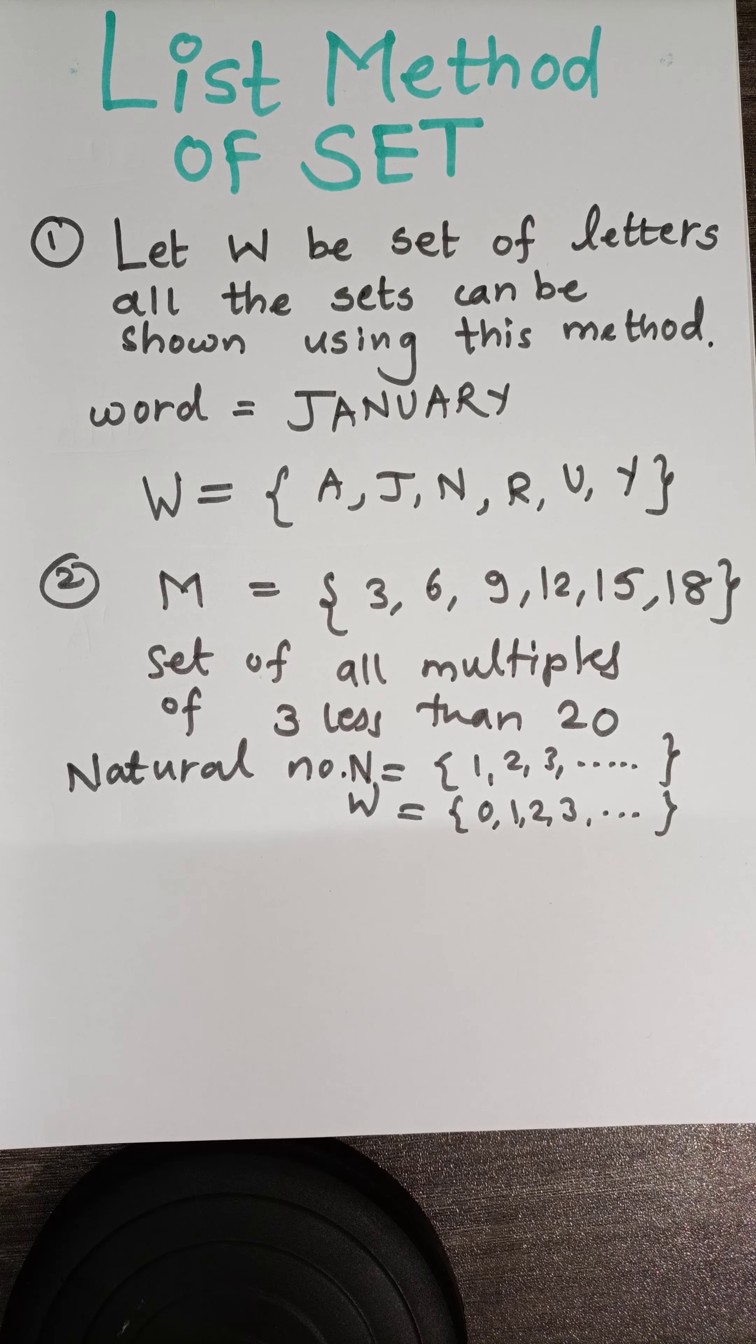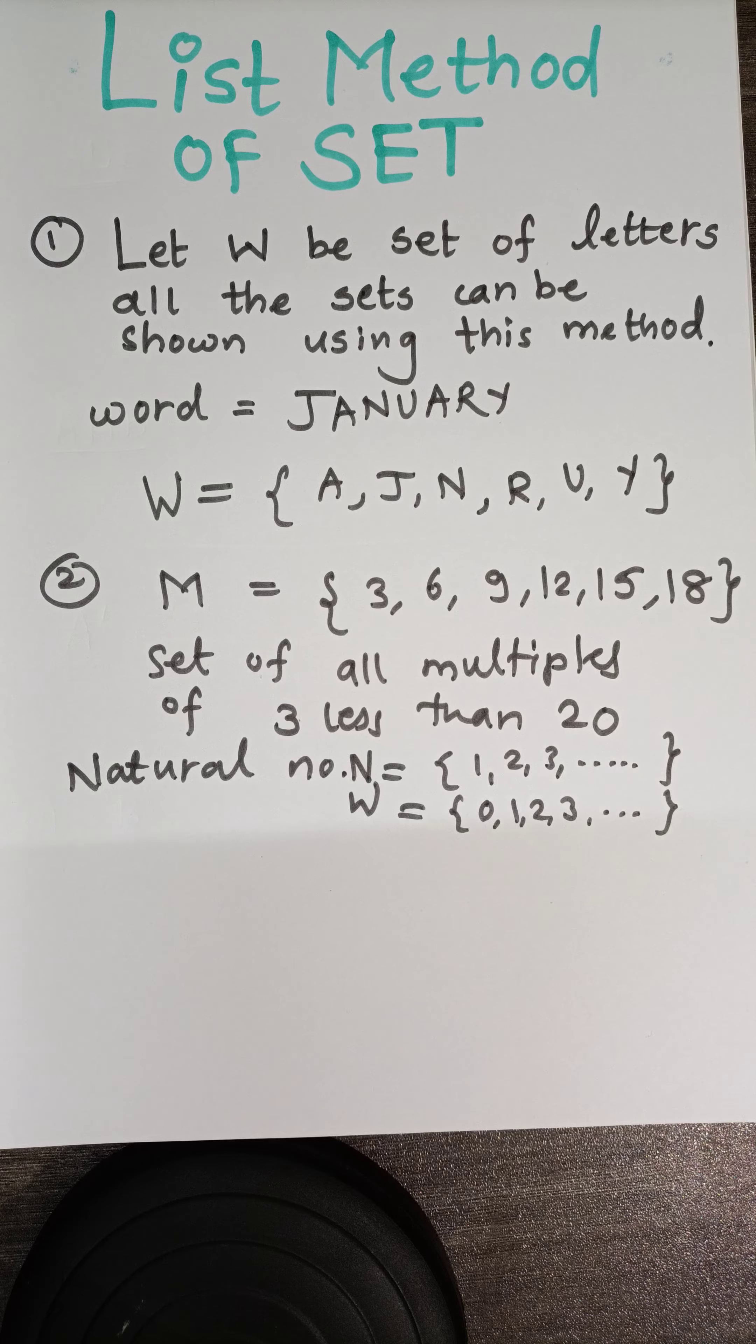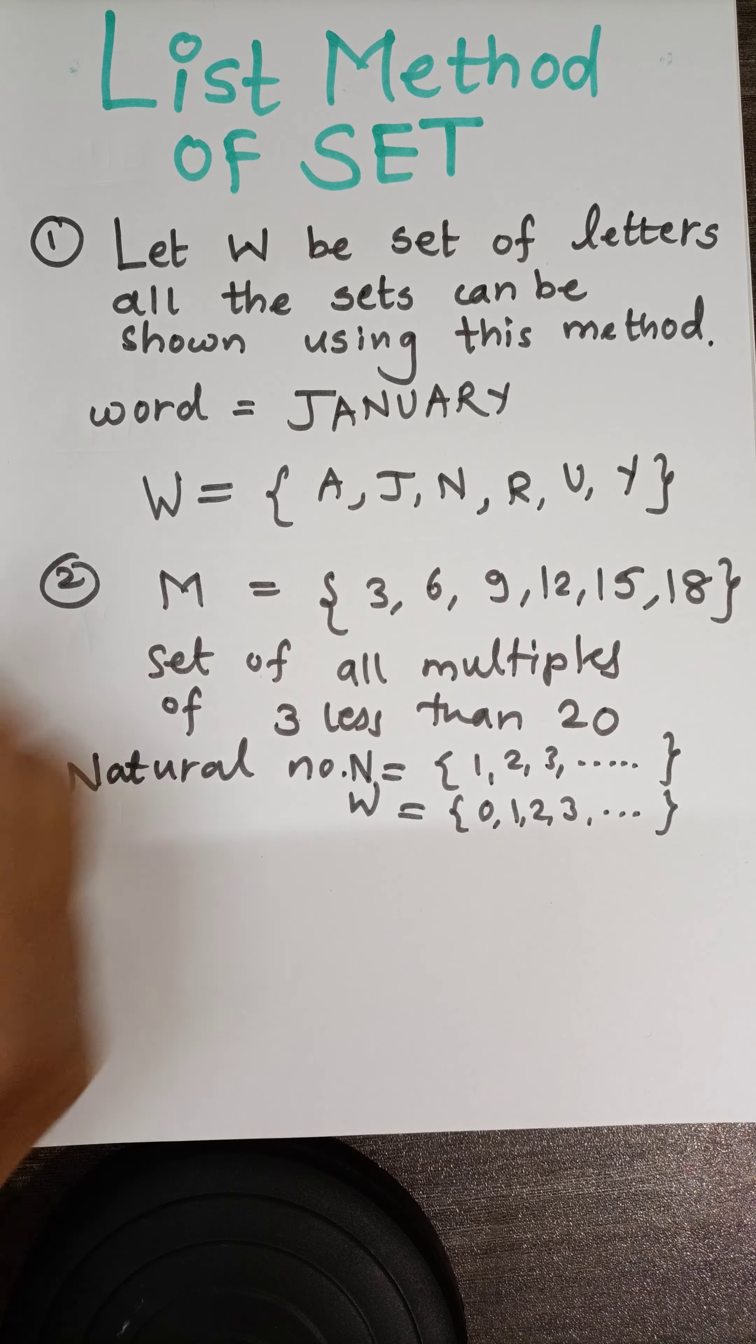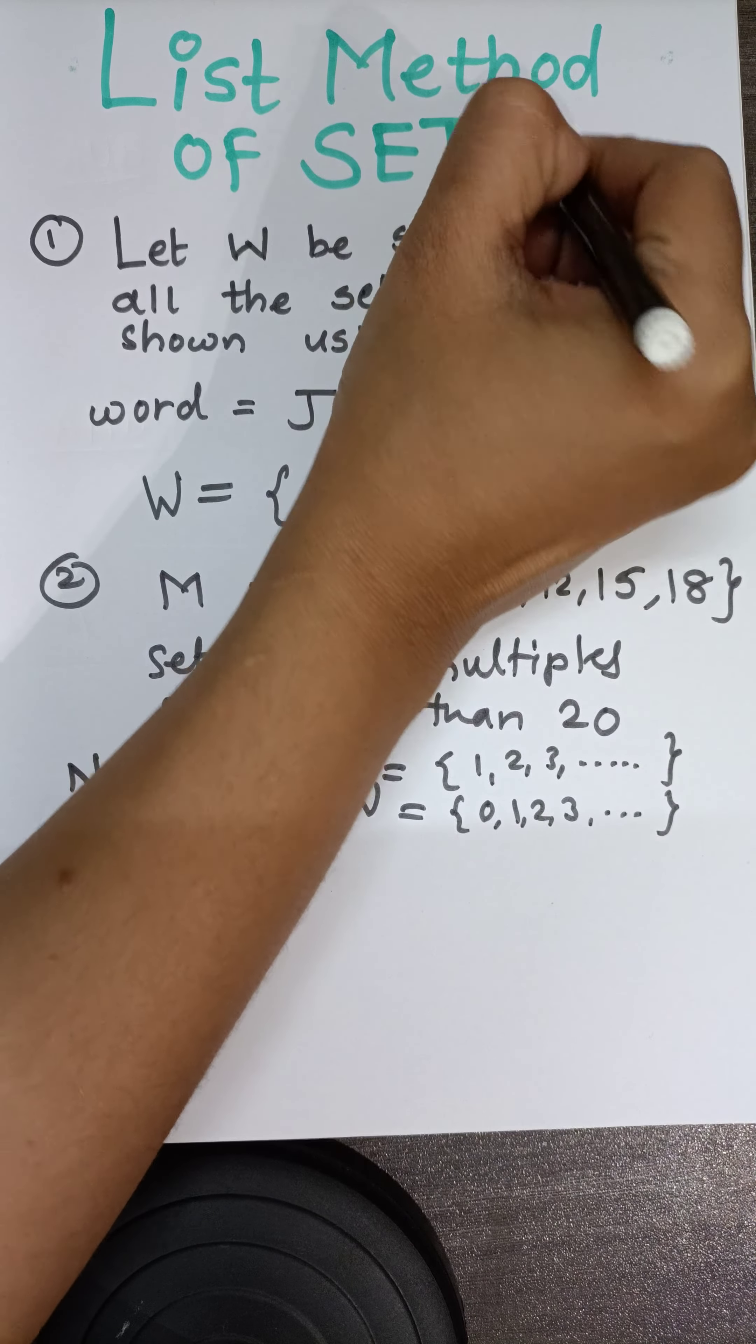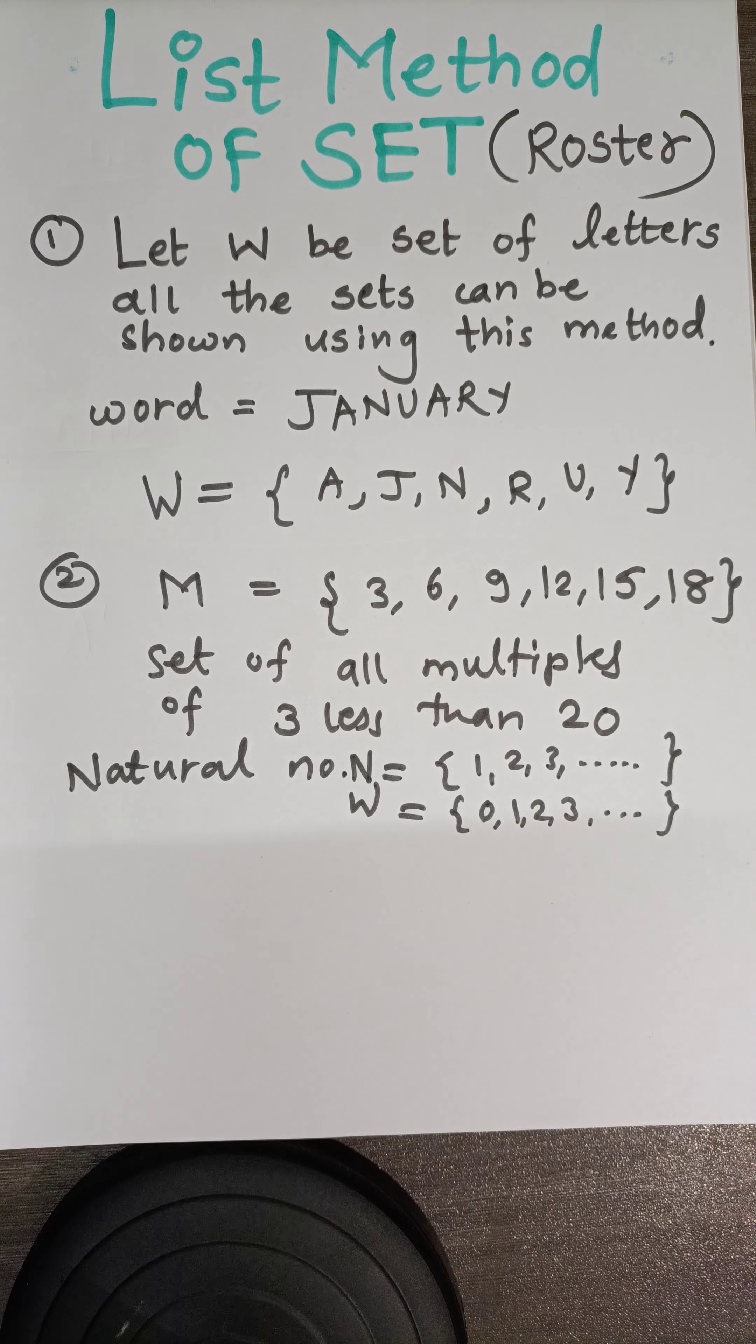Now when we are writing any kind of set, we should indicate the set with capital letters only. And we can have different representations of sets. As you have list method of set, we can call this as a roster method also.